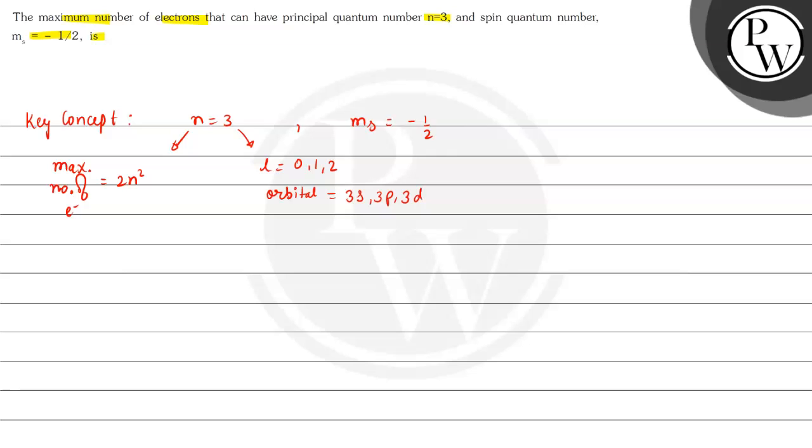Therefore, from this method when we find out 2 multiplied by 3 whole square because n value is 3, so this will be 3 whole square 9, 9 twos are 18. So, here we have 18 electrons.